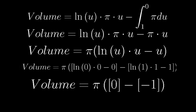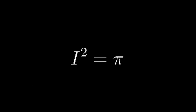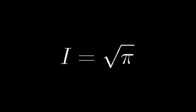Finally, we get that the volume is equal to pi. That's equal to the double integral, which is equal to i squared. So that means that i is then equal to the square root of pi.